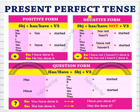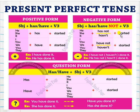Negative form: subject first, then have or has, plus 'not', plus the third verb form. For example, he, she, it — 'has not' or 'hasn't' — plus 'started'. 'Started' is a regular verb, so add 'ed'. I, you, we, they — 'have not' or 'haven't' — plus 'started'. For irregular verbs in negative form, use the third verb list: do, did, done.